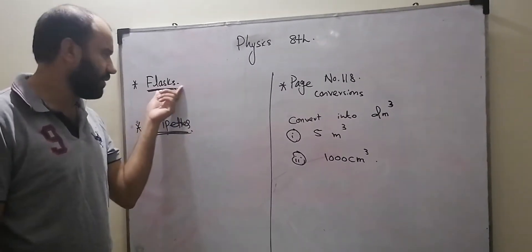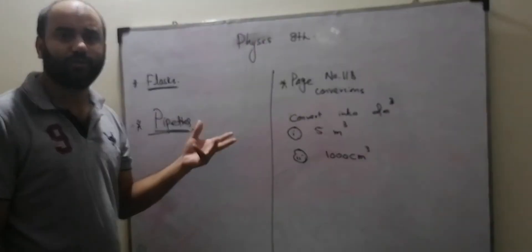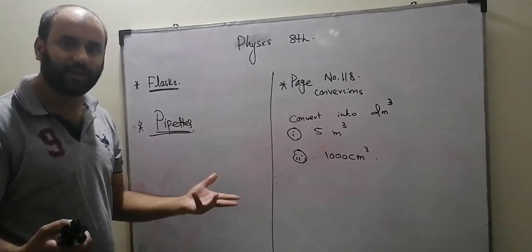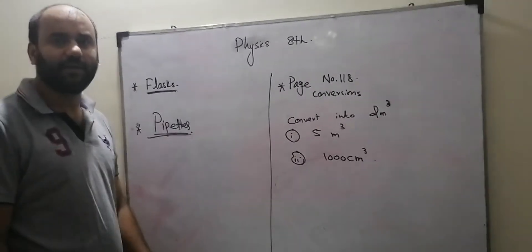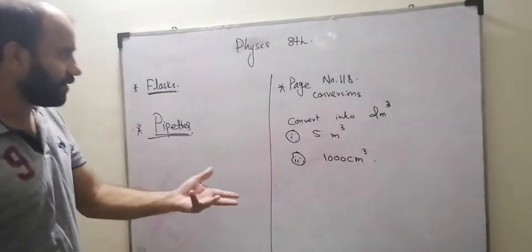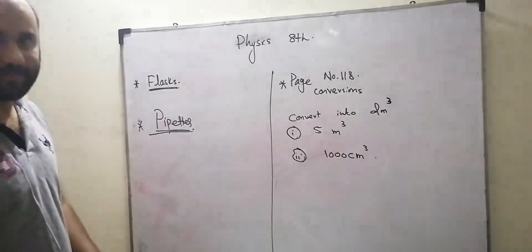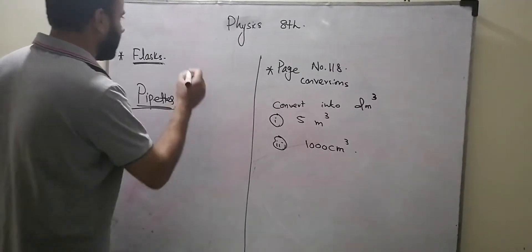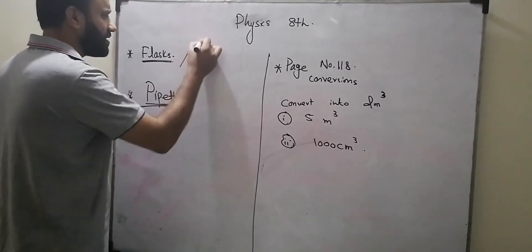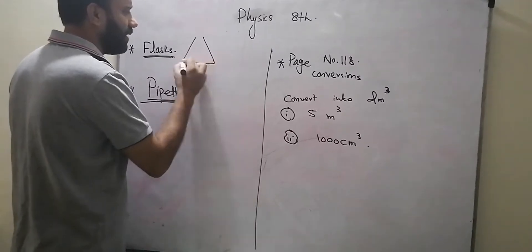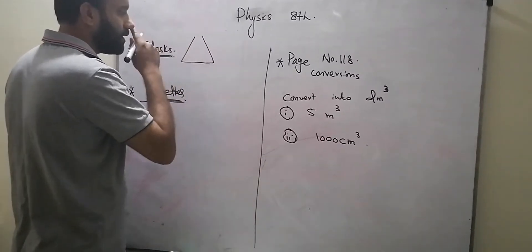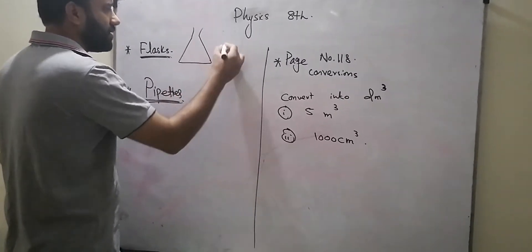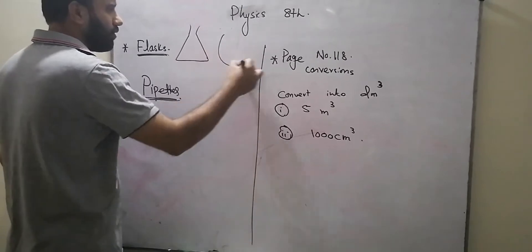We have different solutions in chemistry that we can heat up. Flasks come in different shapes — round bottom and flat bottom.